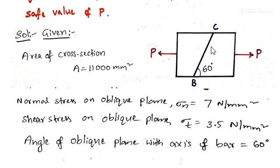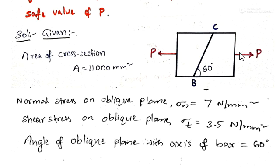These are permissible values — the stresses should not exceed them. From the diagram, the angle of the oblique plane with the axis of the bar is 60 degrees in the axial direction. The load is a direct axial load, making this Case 1 in principal stresses and strains, where the member is subjected to direct stress or load in only one direction.